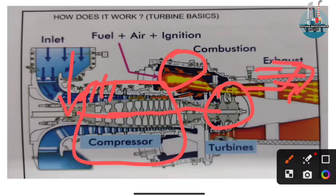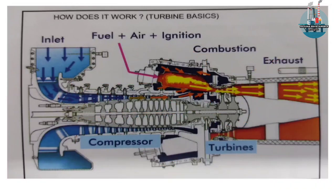If we use the exhaust heat, we can heat water or oil in the plant using a heat recovery unit — a waste heat recovery unit. We can use the heat to boil water and produce steam, and use the steam turbine in a combined cycle. This is the open cycle configuration.